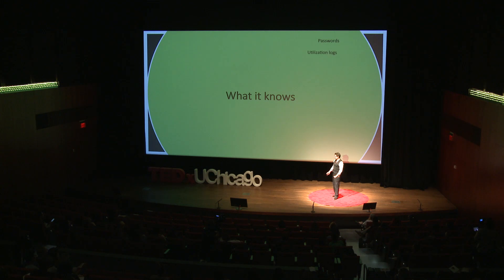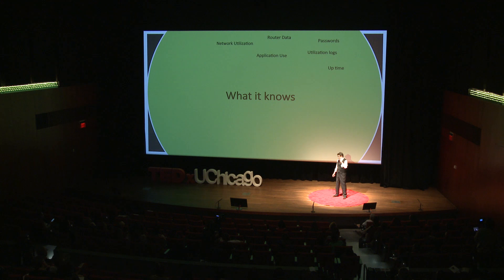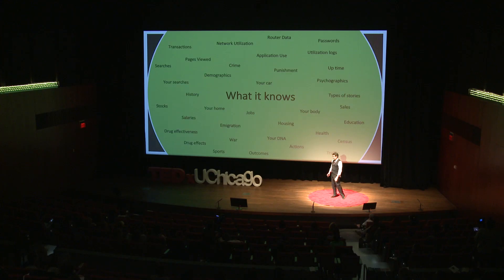Think about what it knows. In the early days, the machine knew about itself — how it was on, router traffic, what applications were being run, a little about the network, CPU utilization. But then we had a tiny change: we opened up the world of search, the world of things we could find. And then it started knowing about our searches — our searches in particular. And then it started knowing about absolutely everything.